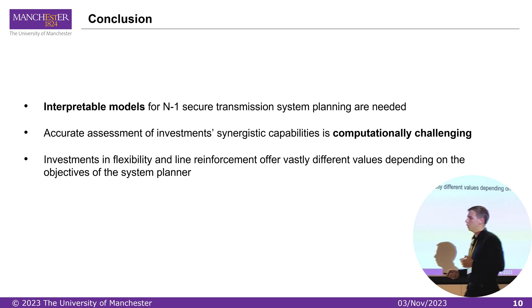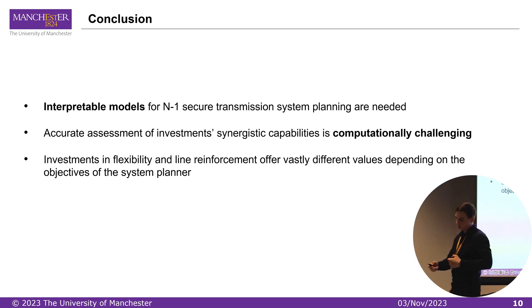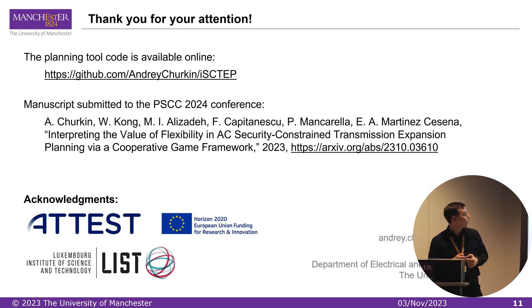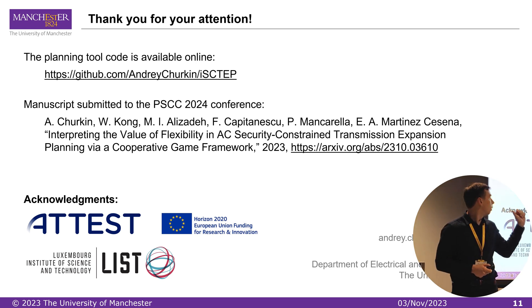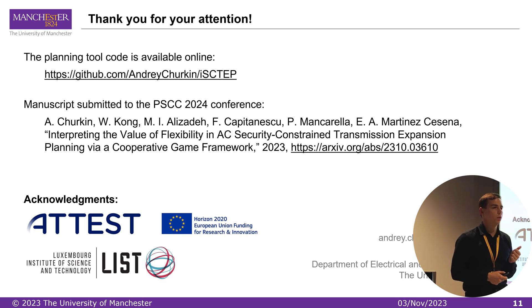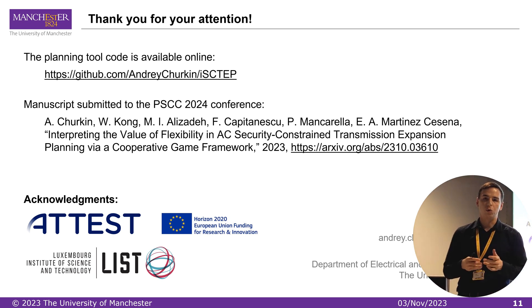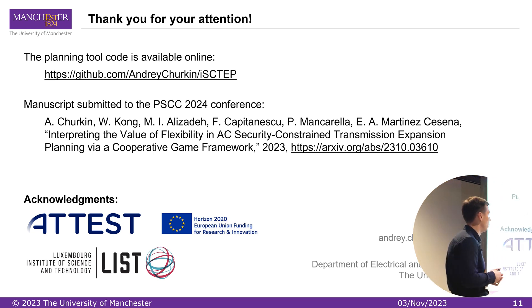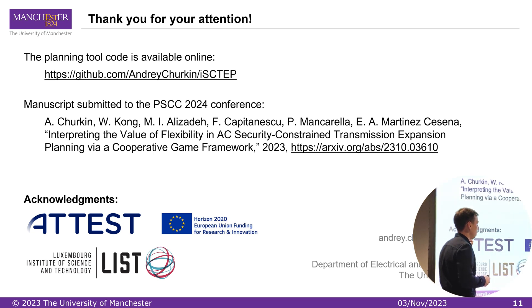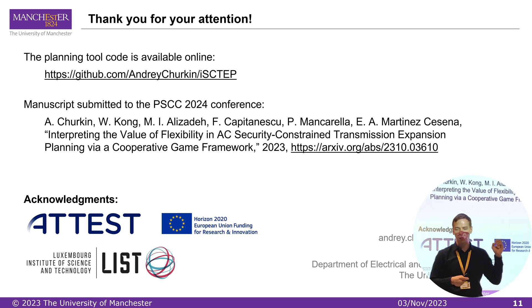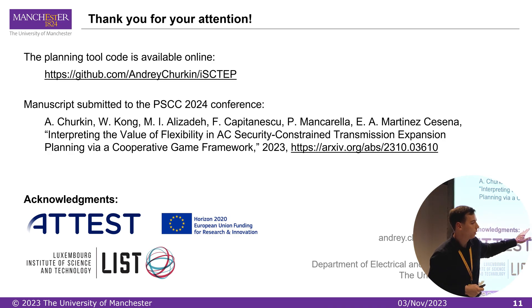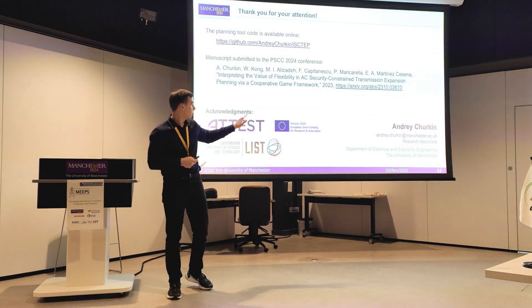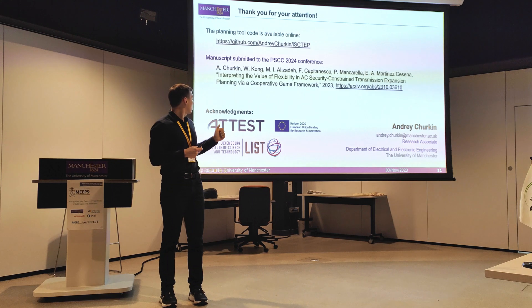The code for this tool is published online on GitHub. We call it ISCTEP, which stands for Interpretable Security Constraint Transmission Expansion Planning. If you are interested in this research, feel free to check the tool. We also submitted results to a conference taking place next summer in Paris, and the manuscript is available online with more details about the simulations. Thank you for your attention.